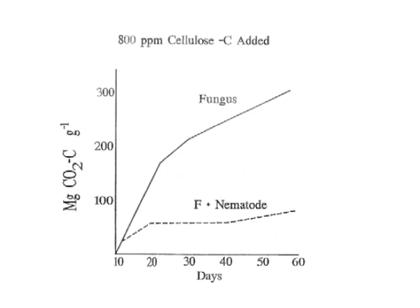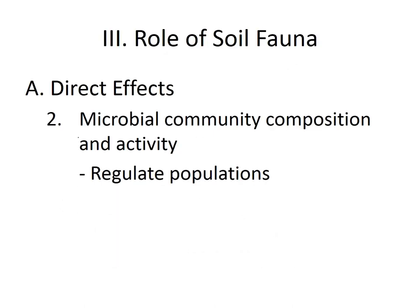Another study examined the effect of nematodes on CO2 release from organic matter involving fungi. When cellulose is added to soil, fungi degrade it. If nematodes that feed on fungi are also added, they reduce fungal propagules, resulting in less CO2 released from cellulose degradation. Without nematodes, fungi continue degrading cellulose and more CO2 is released. This demonstrates that soil fauna can indirectly regulate CO2 release by controlling fungal populations.